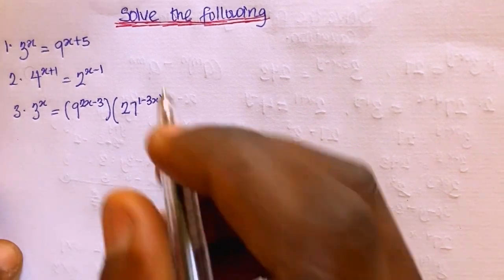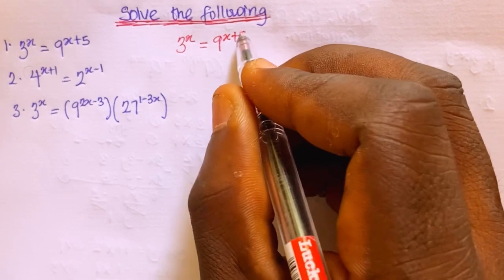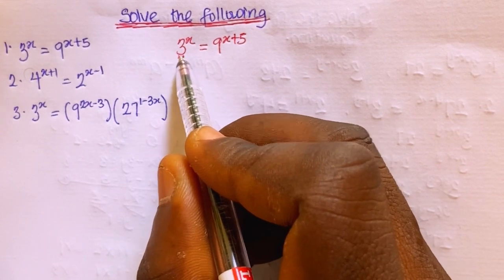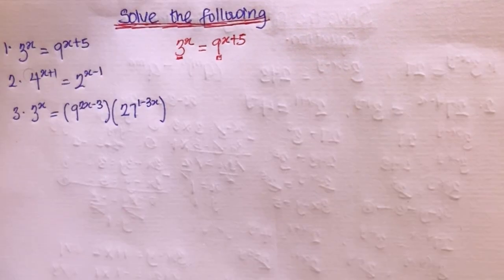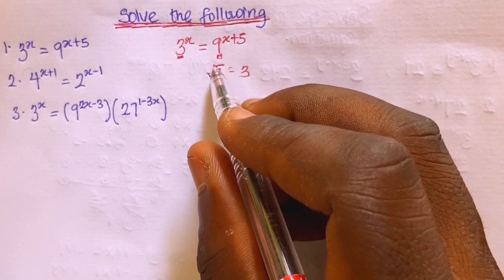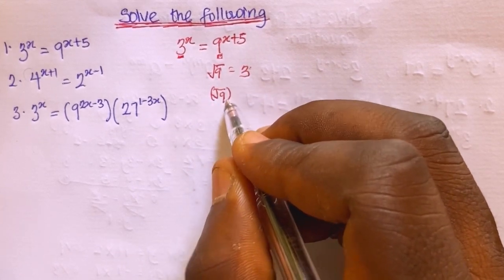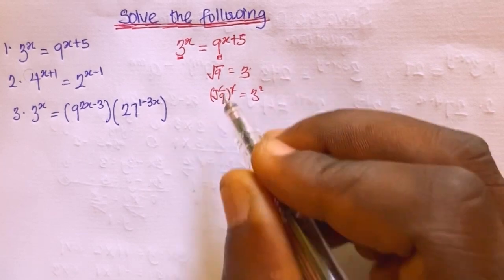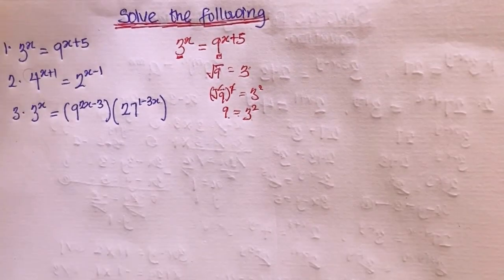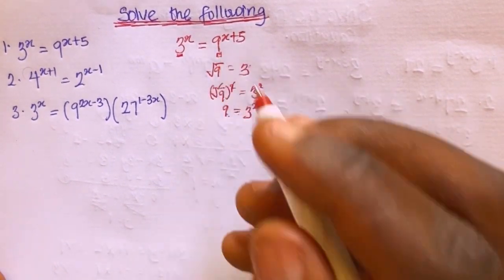Suppose we have 3 raised to the power of x equal to 9 raised to the power of x plus 5. Now, the square root of 9 is 3, and squaring both sides gives us 9 equals 3 squared. So since 9 equals 3 squared, I'm going to substitute that in.